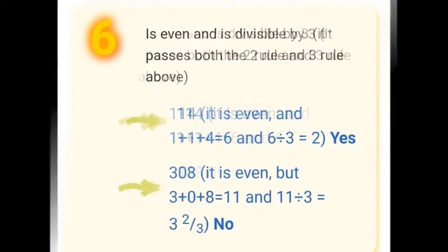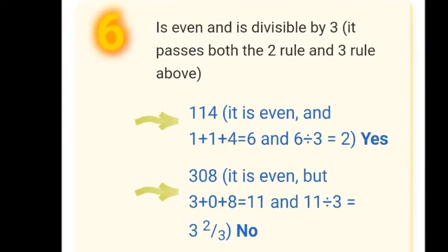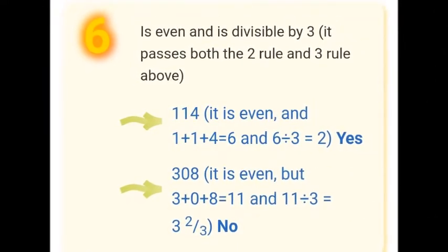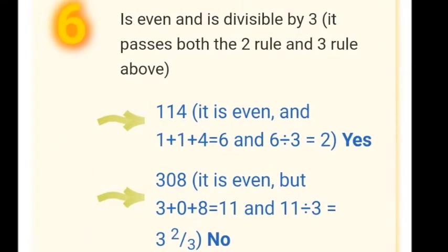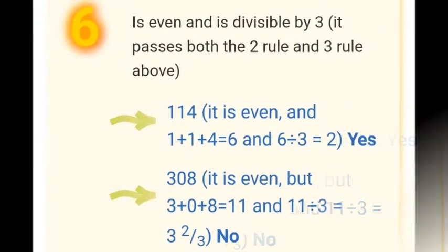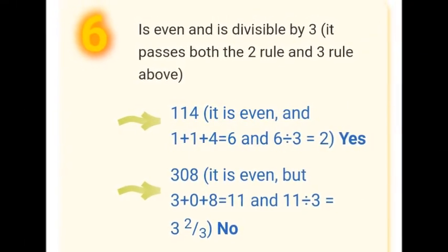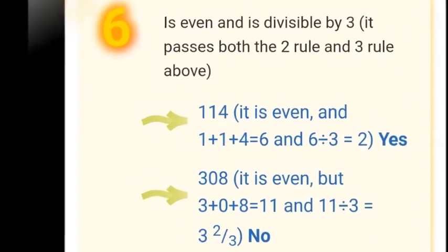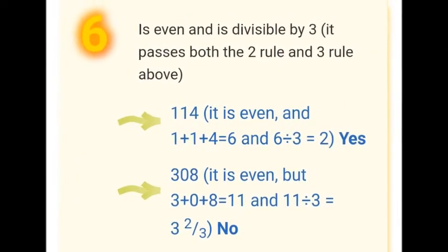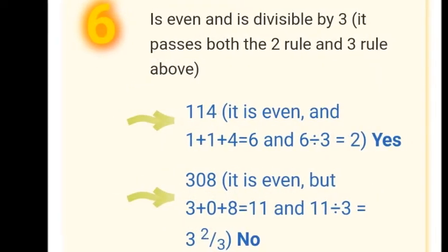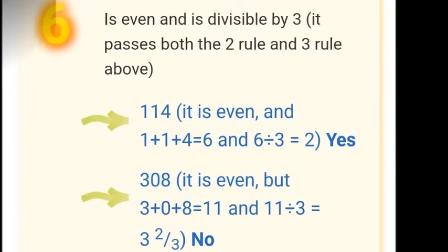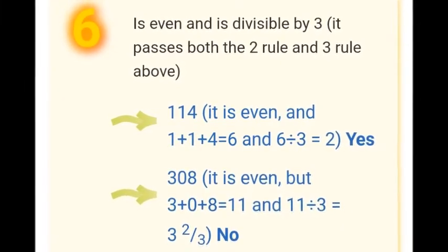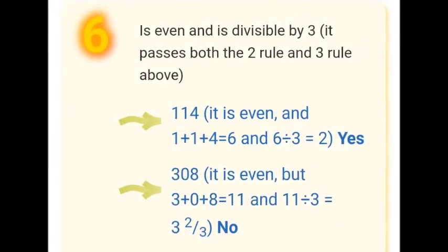Let's now discuss divisibility by 6. Since 6 has two prime factors, 2 and 3, a number is divisible by 6 if it is divisible by both 2 and 3. In other words, a number passes the divisibility test for 6 if it satisfies two rules: it is divisible by 2 (i.e., it is even) and it is divisible by 3.